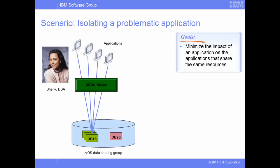Shelly, the DBA, can set up a DB2 for ZOS subsystem with multiple members of a data sharing group. One or more data sharing members can be used as a penalty box for problematic applications that negatively affect the performance of other applications. In this scenario, member DB2 is used as a penalty box. When the application is isolated in the penalty box, it can use only the resources shared by the penalty box members. The penalty box insulates the excessive resource consumption of the problematic application and prevents it from affecting the performance of all the other applications.